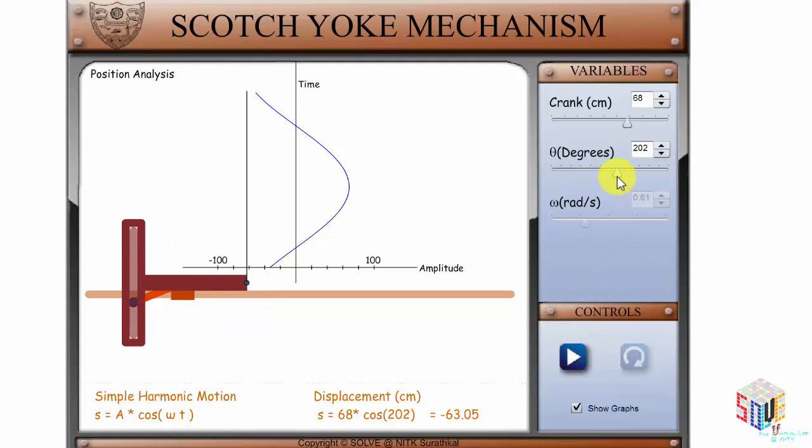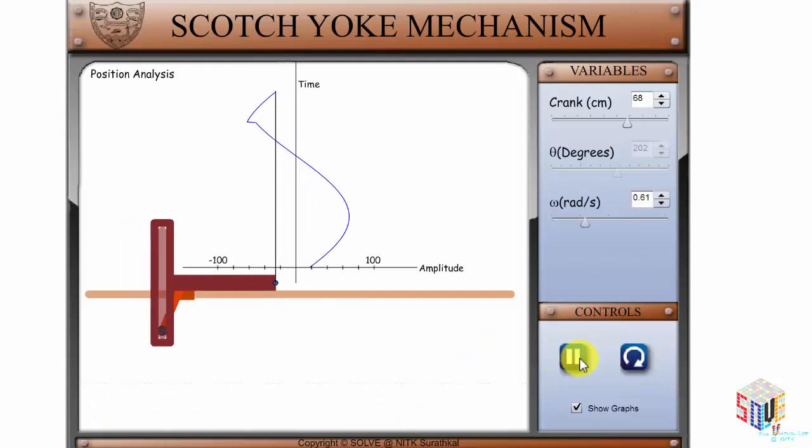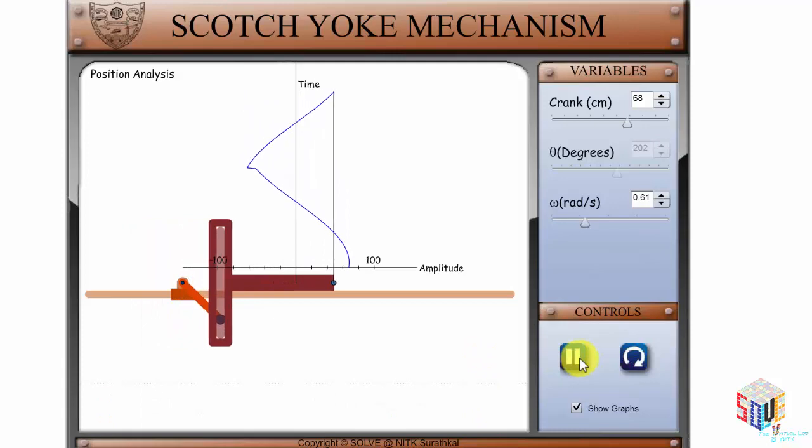Once you set it up for the required angle theta, the corresponding position of the system is found here. Now, press play to see and analyze the changing position of the Scotch-Yoke mechanism. Thank you for watching this tutorial.